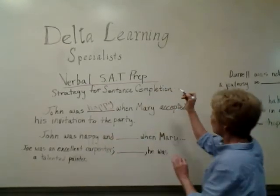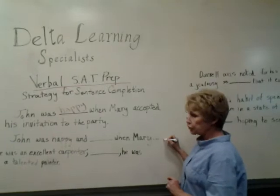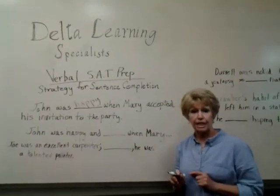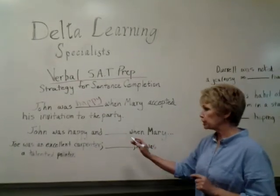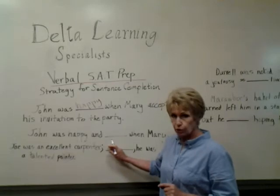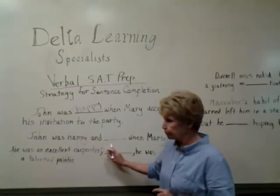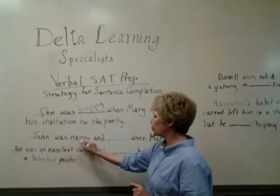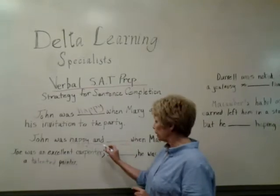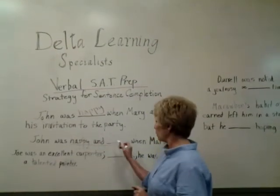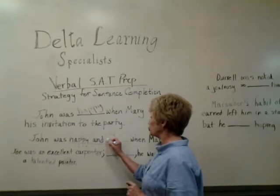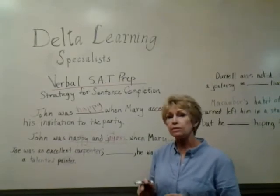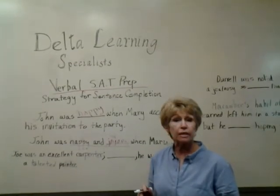Another example: 'John was happy and blank when Mary accepted his invitation to the party.' This is a very similar sentence, but it shows one of the most common kinds of clues — I call it a synonym clue. 'John was happy and blank' — when they set you up this way, they want you to put in a word that is a synonym for happy. So you could put in joyous, jubilant, thrilled — anything that means the same thing as happy. That's a synonym clue.